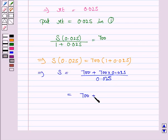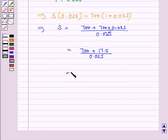Dividing 717.50 by 0.025, we have 28,700.